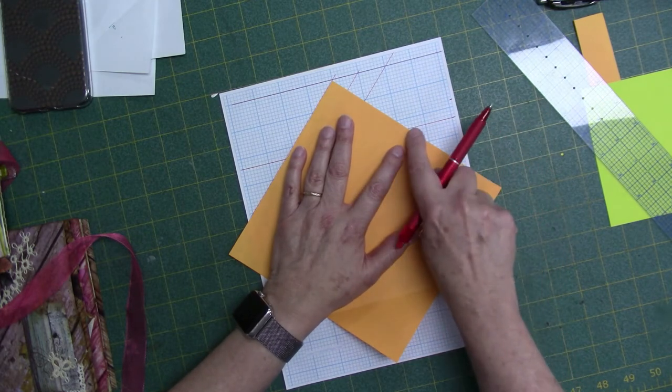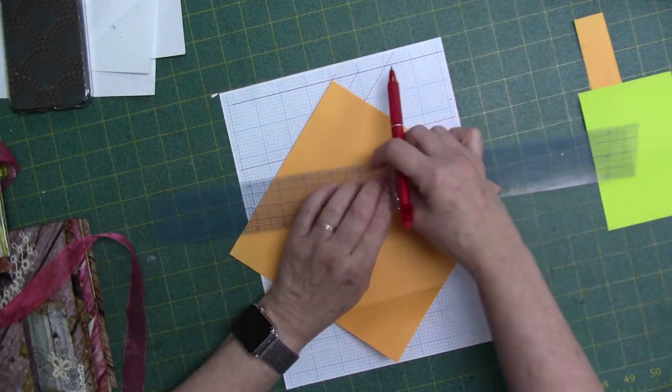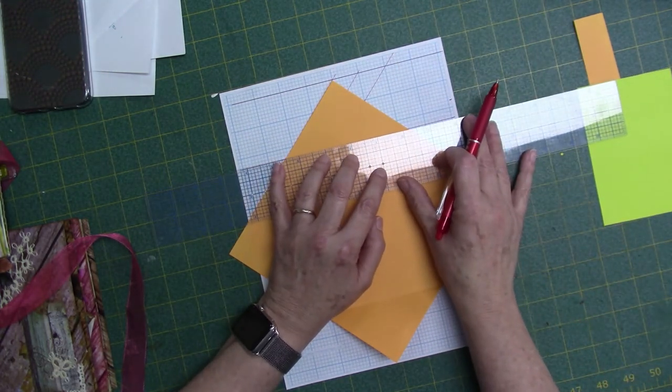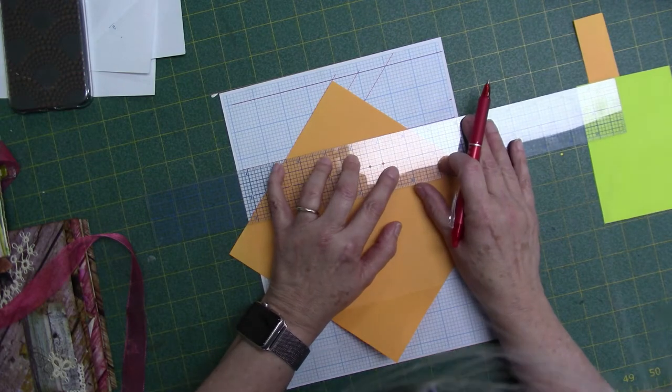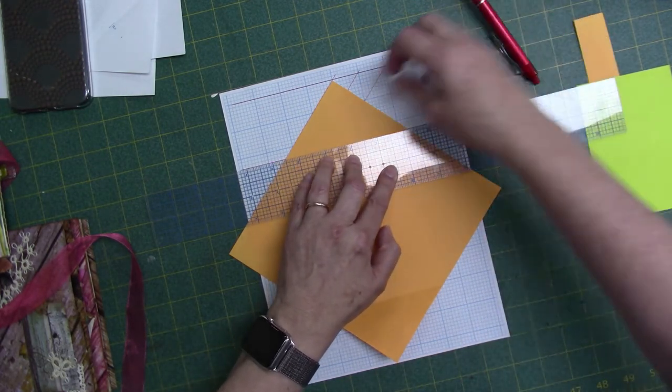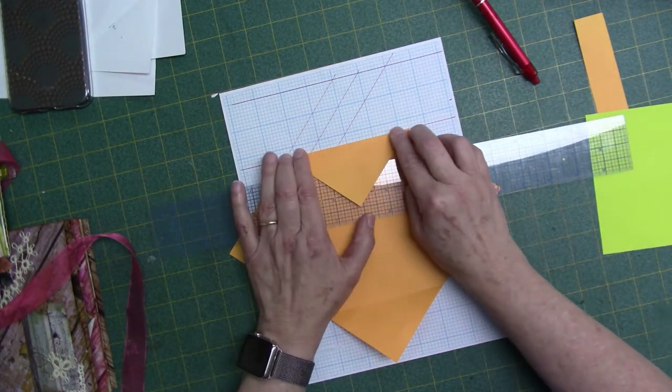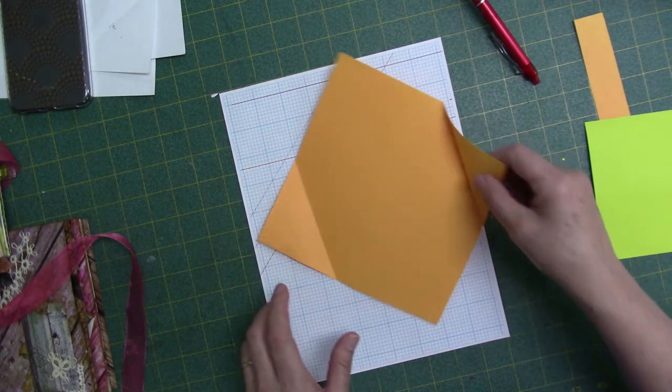Or you can just eyeball it, but my eyesight is not very good. All right. So let me choose one of these other lines. That's a lot better, because now I can see this red line on both sides. So you're learning from my mistakes. Now I can get a better fold that I know is going to be straight. So these are my A corners. So that was the short side of my card.